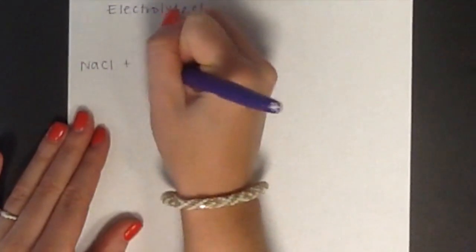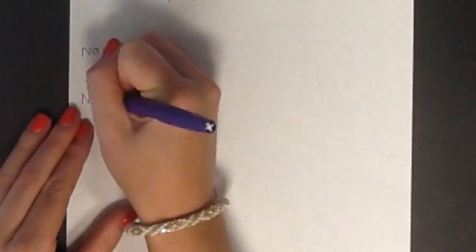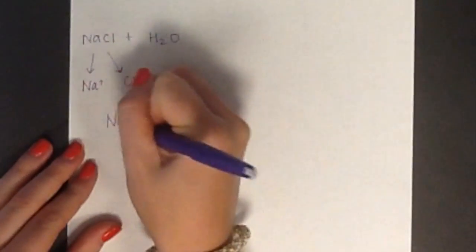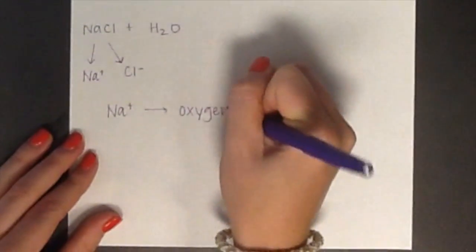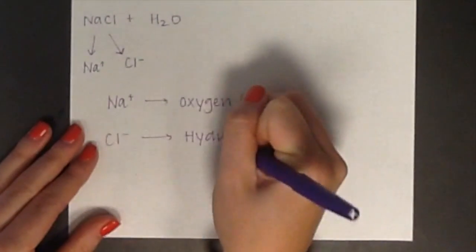These substances are called electrolytes. In solution, sodium chloride will dissolve in water and will break into the ions of Na+ and Cl-. Na+ will be attracted to the oxygen in water, and Cl- will be attracted to the H in water.